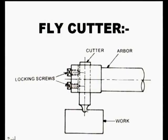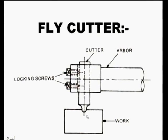The fly cutter is basically a single point cutting edge milling cutter. It is used in emergency when no milling cutter is available to get the required contour on the surface. The fly milling cutter is fixed to the arbor by means of locking screws; the cutter rotates, removes material, and leaves the required surface on the workpiece.